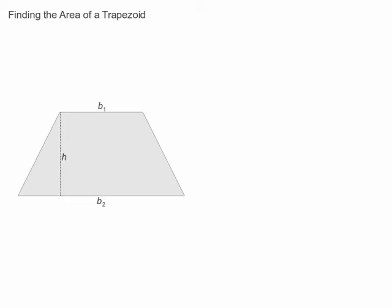It turns out that math, great modeling system that it is, has a single simple formula that will give us the area of any trapezoid. Area equals the sum of base 1 and base 2 multiplied by the height, then divided by 2.